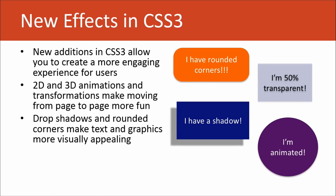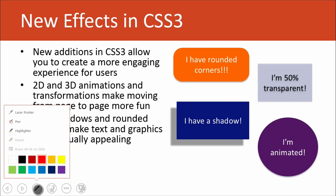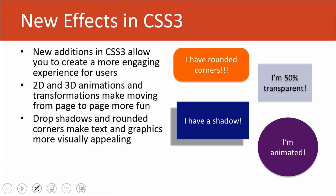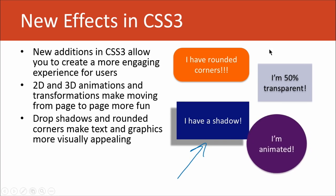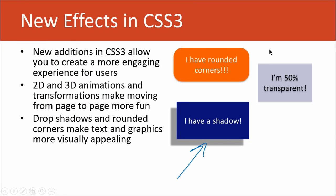Some new effects in CSS3: you can now round corners on objects, which is exciting. You can make things transparent — this is 50% transparent over here. You can also give things shadows, like this lovely rectangle here. And then you can also animate objects, like this circle — make them bounce out of here.